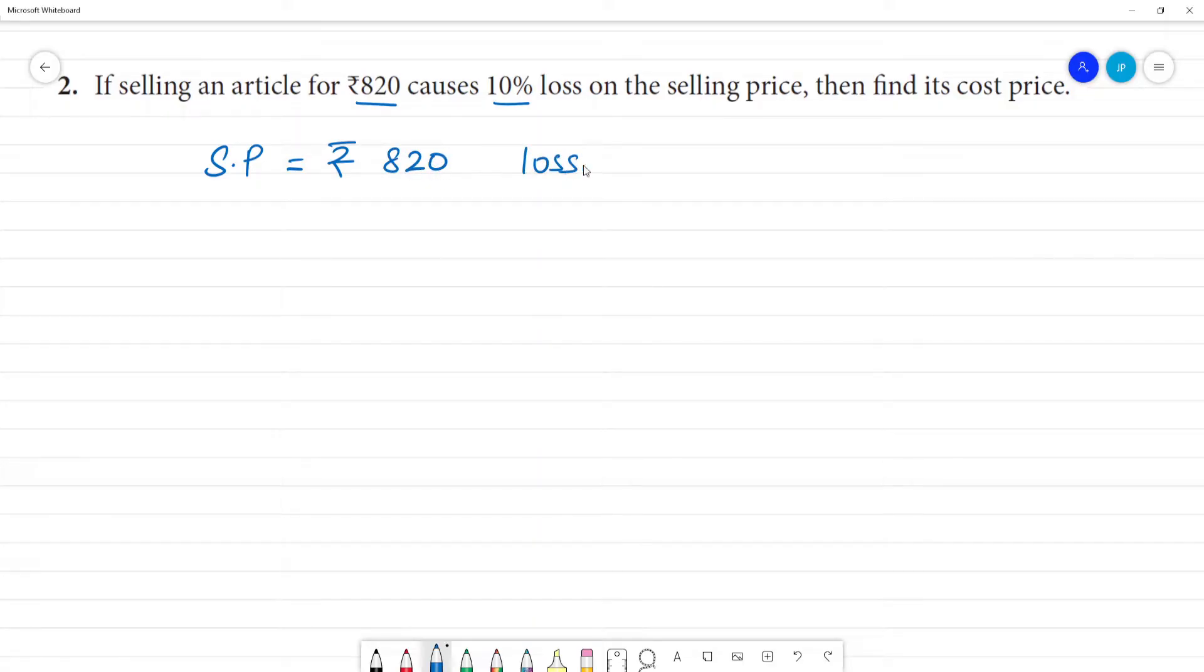Loss percentage, loss percentage is 10%. Loss percentage is equal to 100 minus loss percentage by 100 into CP. So, this formula we have to add.